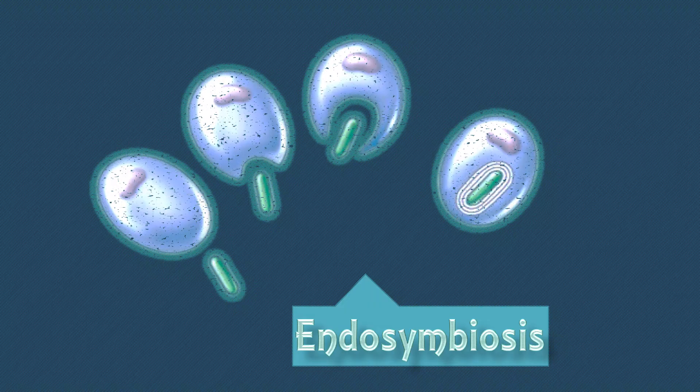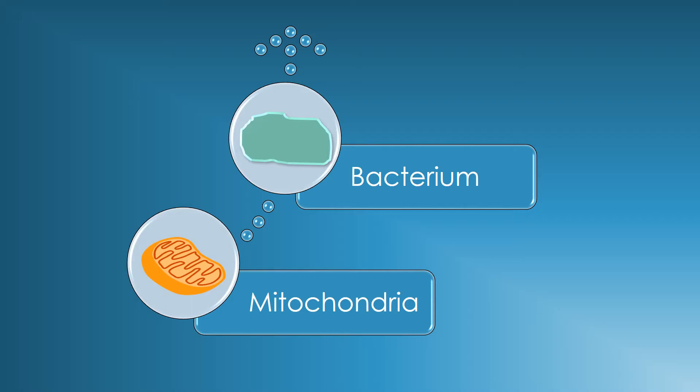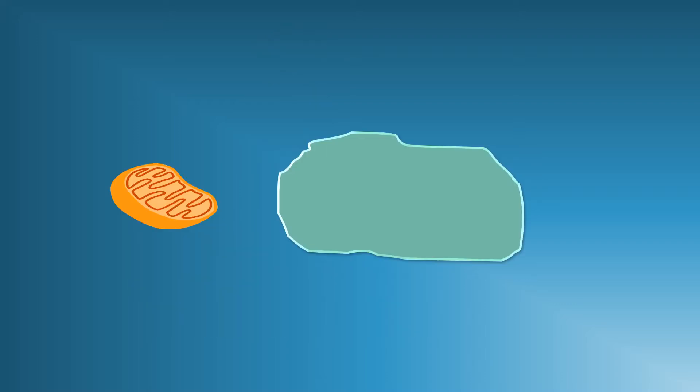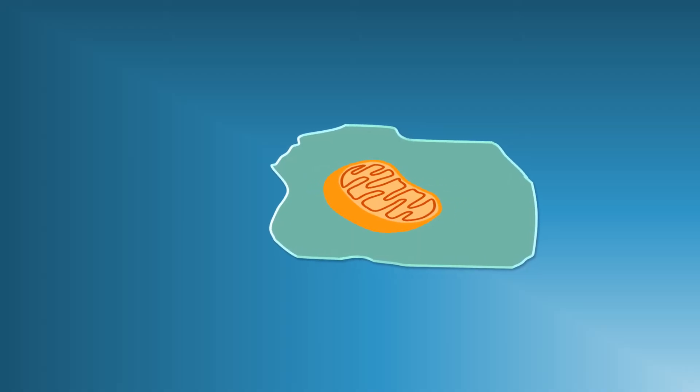A prokaryote, such as a bacterium, was engulfed within another bacterium through endosymbiosis. A cell living within another cell, as they both benefit from each other, is what evolved the prokaryotes into eukaryotes. Eukaryotic cells contain DNA in a nucleus and have mitochondria, the powerhouse of the cell.